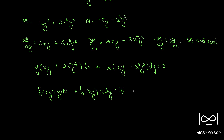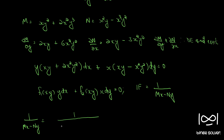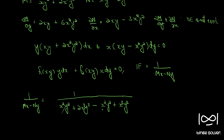For such a differential equation we can find the integrating factor using the formula 1/(Mx − Ny). So 1/(Mx − Ny) = 1/(x²y³ + 2x³y³ − x²y³ + x³y³). The x²y³ terms cancel, and 2x³y³ + x³y³ = 3x³y³, giving integrating factor = 1/(3x³y³).